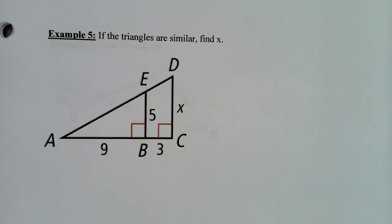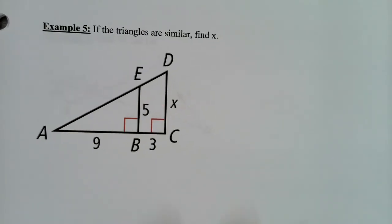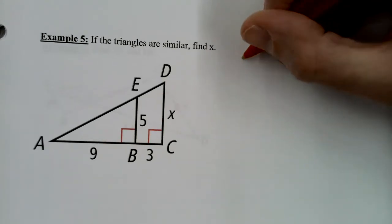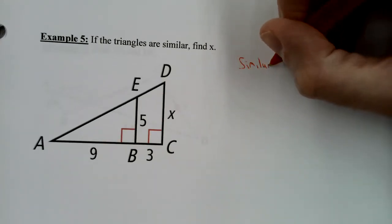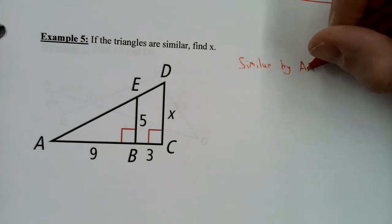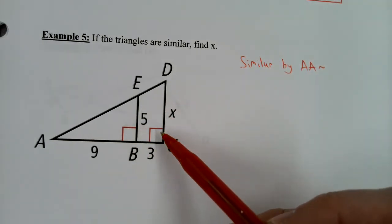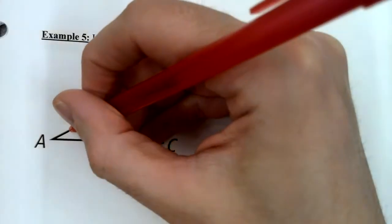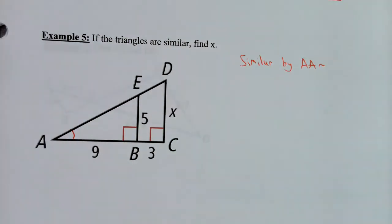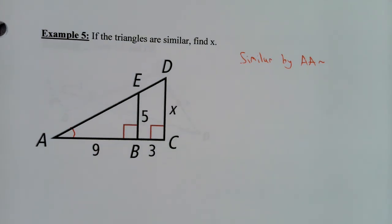Example five: if the triangles are similar, find X. The two triangles are similar by angle-angle similarity. The small triangle has a right angle, the big triangle has a right angle, and angle A is common to both — that's like using the reflexive property.